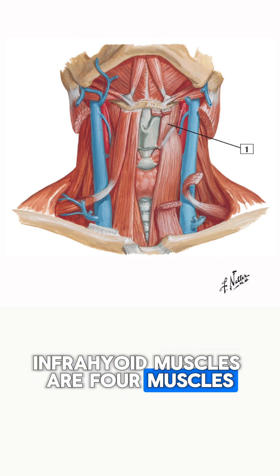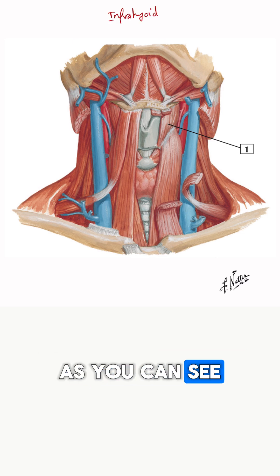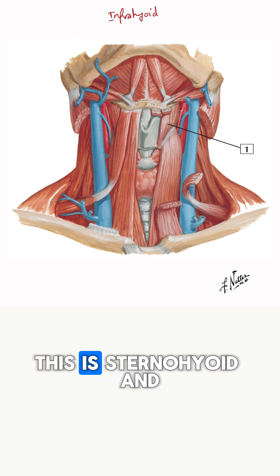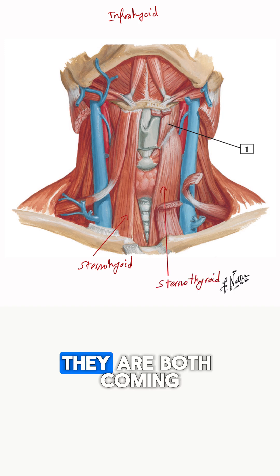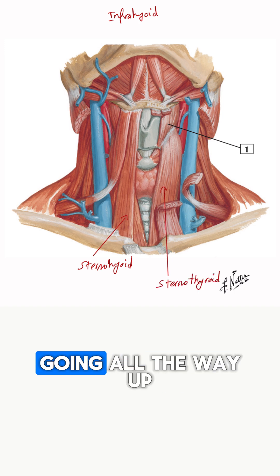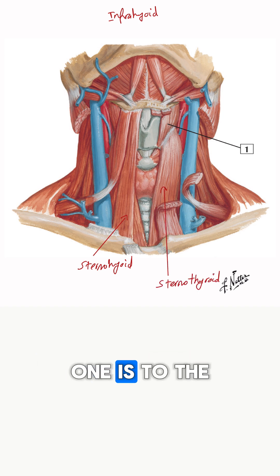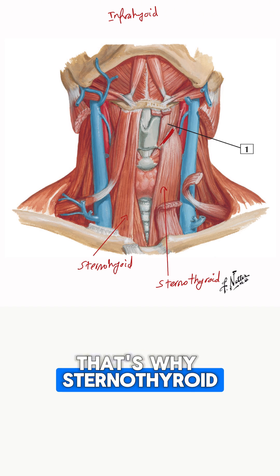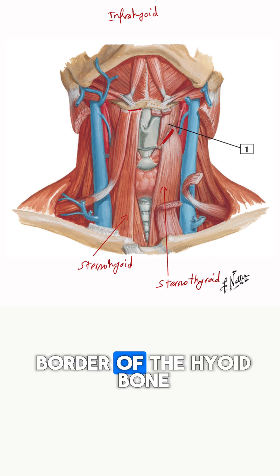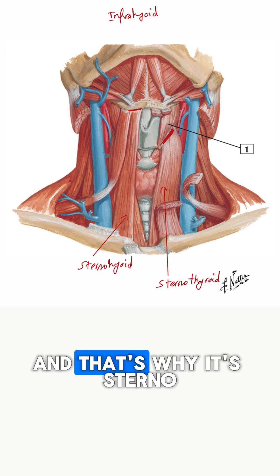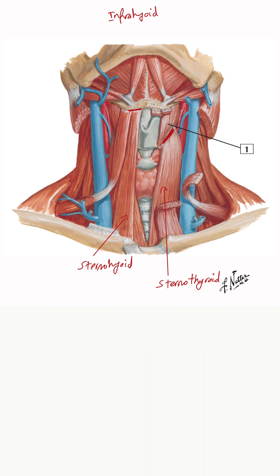The infrahyoid muscles are four muscles. As you can see in the diagram, this is the sternohyoid and this muscle is the sternothyroid. They are both coming from the sternum and going all the way up — one is to the oblique line of the thyroid cartilage, that's why it's called sternothyroid, and the other one is to the lower border of the hyoid bone, that's why it's called sternohyoid.